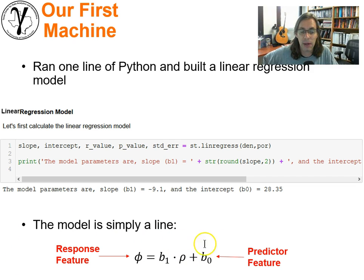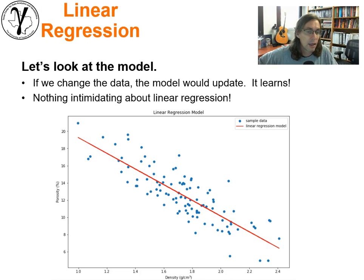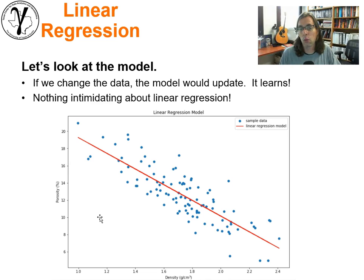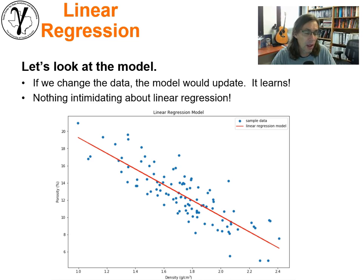We are predicting porosity with our specific predictor feature, density in this case. If we look at the model, it looks pretty good. If we change the data, the model would update. We could suggest that we have a model that's learning from the data, and we could argue about whether or not this is complicated enough to be considered machine learning. But I would say it's machine learning, and I'd love to welcome the arguments around that.